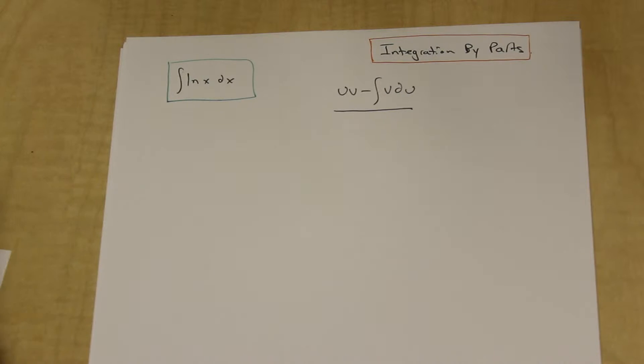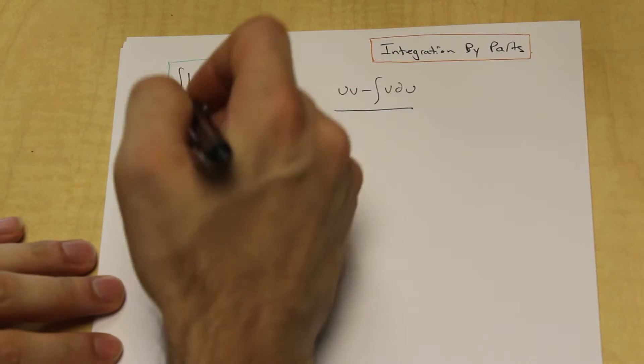So what we learned in previous videos is that when we're integrating by parts, ln x is always u. We've talked about that before. So we're going to assign ln x to u.